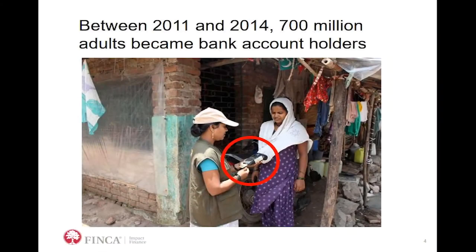But here's the good news: just in three years, between 2011 and 2014, more than 700 million adults in the developing world became bank account holders. Things are improving, and this is a great achievement. A lot of this achievement can be attributed to mobile device technology. Mobile money is becoming a big thing in the developing world — some of you might be using Apple Wallet — and there are other ways to pay without using plastic, just using a smartphone. This technology, however, needs to be provided and run by financial institutions.